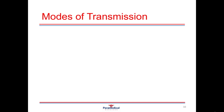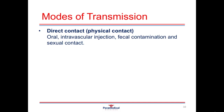The first type of mode of transmission is through direct or physical contact. This is one of the easiest ways for a pathogen to enter into the human body because it bypasses a lot of the body's natural defense mechanisms. Examples of this would be through oral contact, through contact through the eye, intravascular injections, fecal contamination, and through sexual contact.